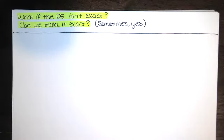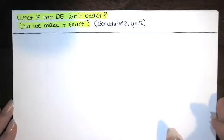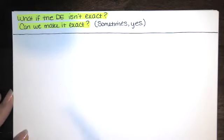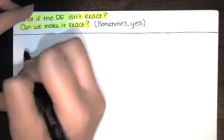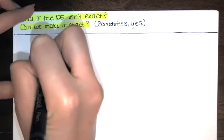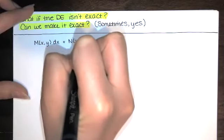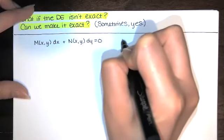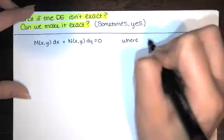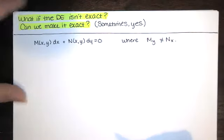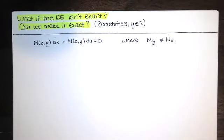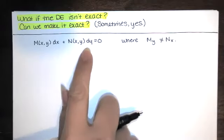What if the differential equation isn't exact? Some students might ask: can we make it exact, is there a way we can multiply by something so the resulting equation will be exact? Yes — we can multiply a differential equation by an integrating factor in some cases, and that integrating factor will cause the modified differential equation to be exact.